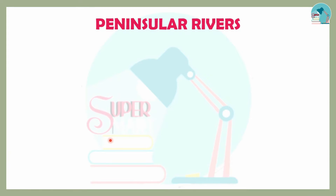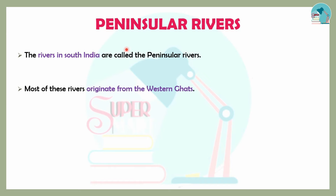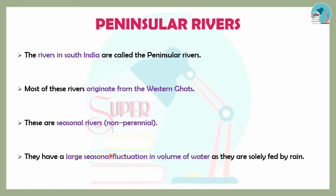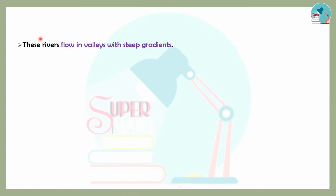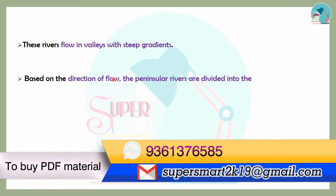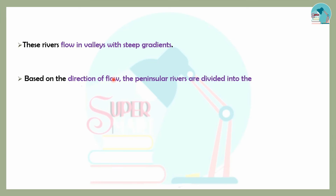Next is the Peninsular River. These are South Indian rivers. Most of these rivers are seasonal rivers, meaning there is large-scale seasonal fluctuation in their volume. Based on their direction of flow, they are divided into East flowing rivers and West flowing rivers.